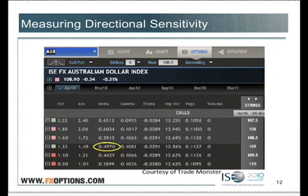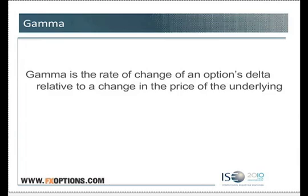Well, there's kind of a curveball — just when you think you got it. But this is measurable as well. Gamma is the rate of change of an option's Delta relative to a change in the price of the underlying. Just like Delta was the rate of change of the option given a change in the underlying, Gamma is the rate of change of the Delta given a change in the underlying.